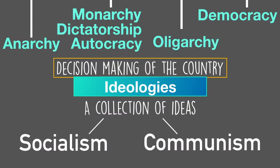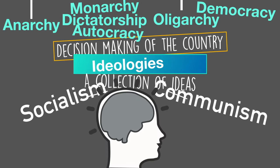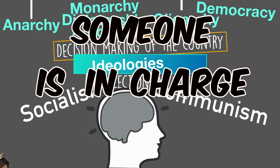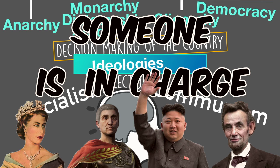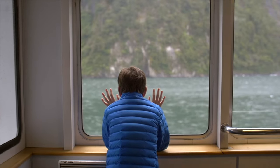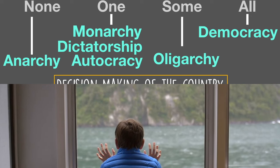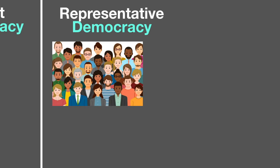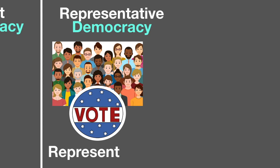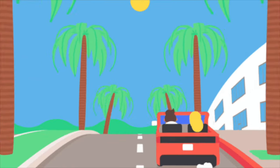And there you have it — all the forms of government and ideologies of how you can run a government, all in one chart. To remember this for the test, just ask yourself how many people actually have the decision-making power. The number one thing to remember is what the United States has: a representative democracy, where everyone has power and we exercise that power by voting for representatives to make decisions in government for us. Thanks so much for watching — I hope you enjoyed it and learned something.